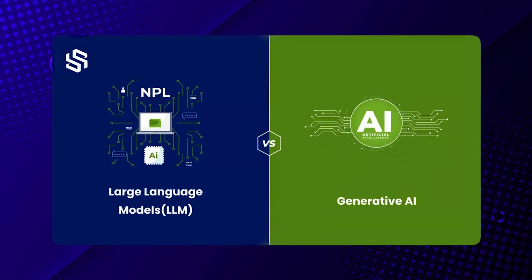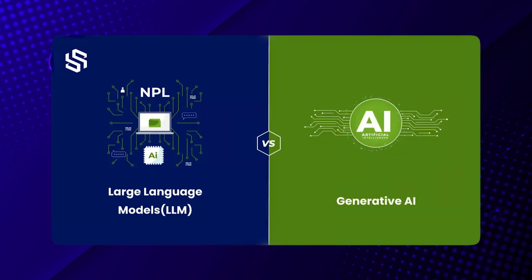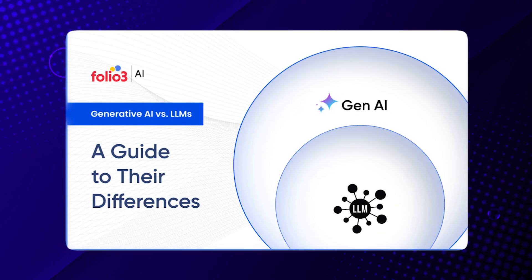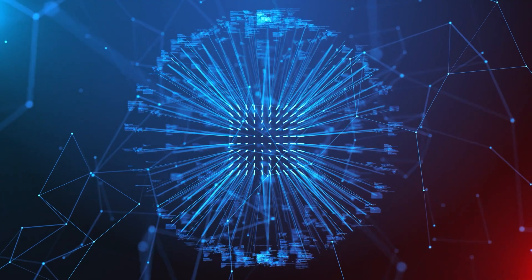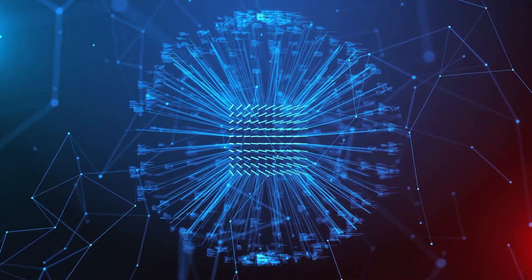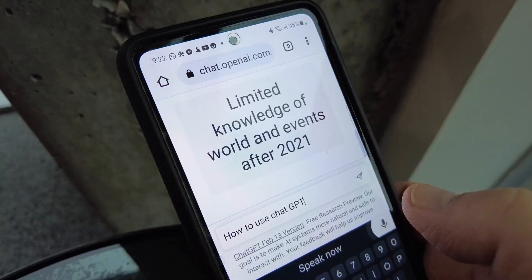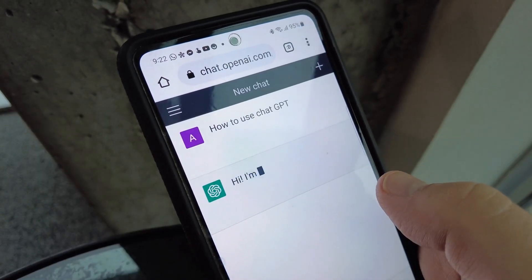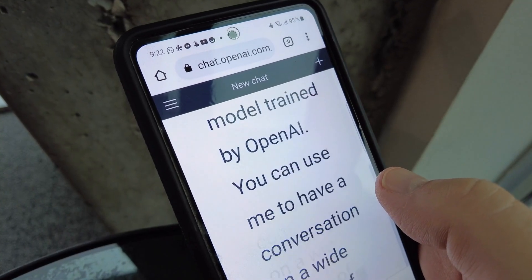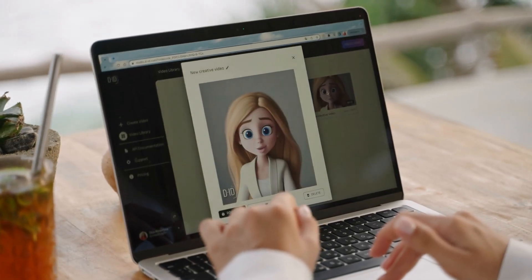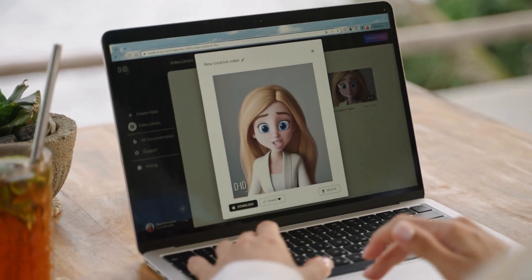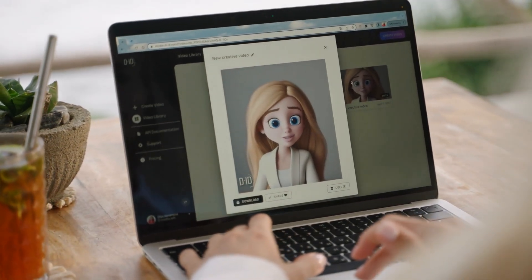Now, you might be wondering, what's the difference between LLMs and generative AI? Aren't LLMs a type of generative AI? The answer is yes, but with some nuances. LLMs are indeed a subset of generative AI, but they focus solely on text. They generate, understand, and manipulate language. Generative AI, on the other hand, is broader and more versatile, capable of creating content across various media types. But while LLMs are masters of text, generative AI takes things a step further.